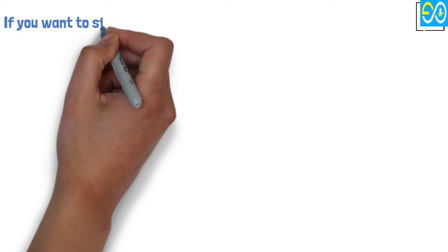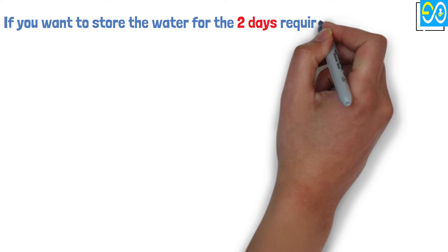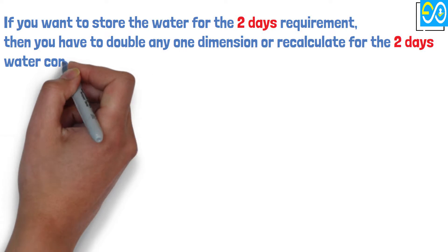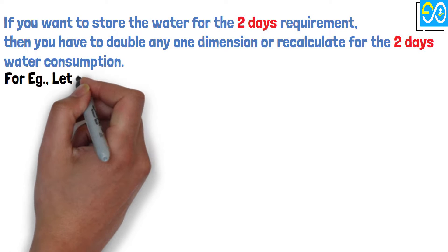Note, if you want to store the water for the two days requirement, then you have to double any one dimension or recalculate for the two days water consumption. For example, let us take 2 times the breadth to double the volume of the tank.